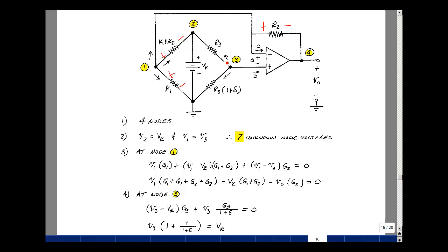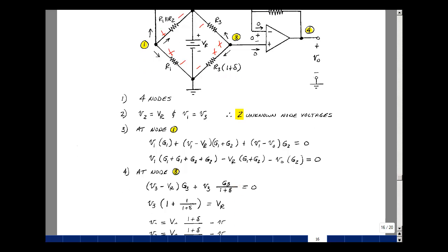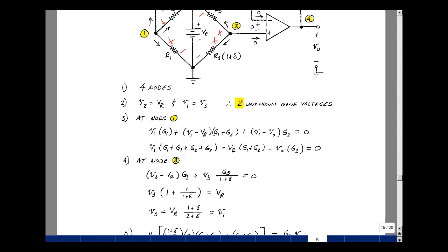Let's sum the currents at node 3. Again, I let them all leave the nodes so that their summation would be equal to 0. The current in the resistor R3 would be V3 minus V2, which is V sub R, divided by R3 or times G3. And then the current here would just be V3 minus 0, divided by R3 times 1 plus delta. But you can write 1 over R3 as G3.